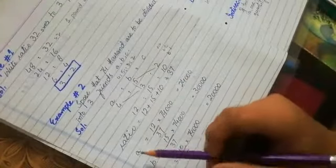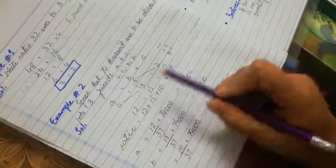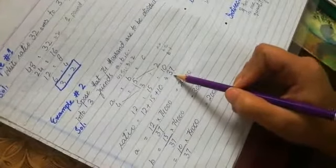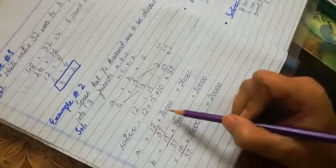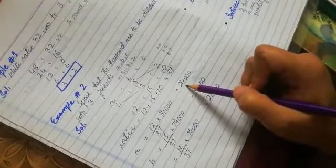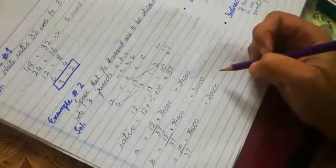Now A is equal to - the percentage we have to give to A is 12% of it. So total number of shares is 37. Of 37, 12% should be A's, so 12 divided by 37 multiplied by 74 will give 24,000. Similarly, we will find B's and C's share, 27 divided by 37.